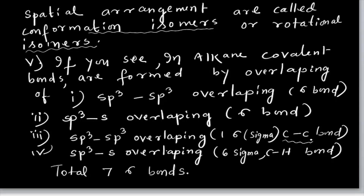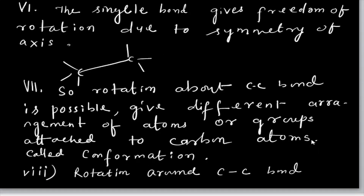In ethane, there are a total of 7 sigma bonds — six C-H and one C-C. The single bond gives freedom of rotation due to the symmetry of the axis. Rotation about the C-C bond is possible, giving different arrangements of atoms or groups attached to carbon — this is called conformation. The phenomenon is called conformational isomerism.